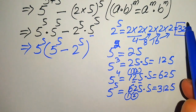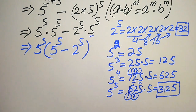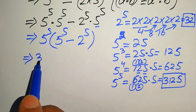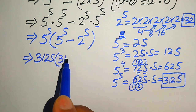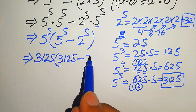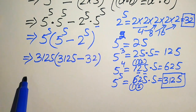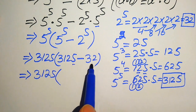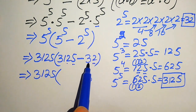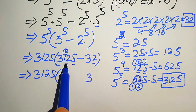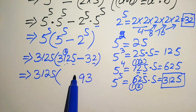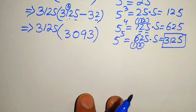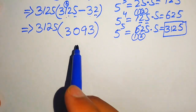We now substitute the values: 5 to the power of 5 equals 3125 and 2 to the power of 5 equals 32. So the expression inside the bracket becomes 3125 minus 32. Subtracting: 5 minus 2 is 3, 2 cannot be subtracted from 3 so we carry 1 giving 0, 12 minus 3 is 9, giving us 3093.